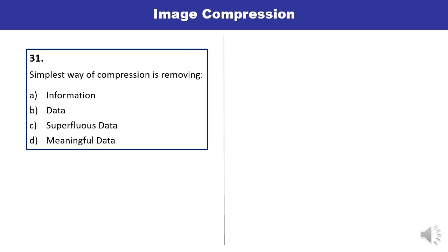Question 31: The simplest way of compression is by removing — information, data, superfluous data, or meaningful data? The simplest way is to remove superfluous data. Answer is C.